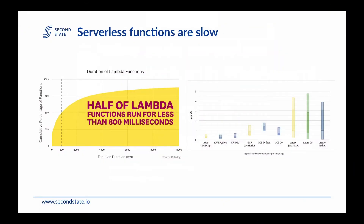One of the primary issues is that serverless functions are slow and they're also heavy. On the graph on the left, we can see data from Datadog showing that half of Lambda functions run less than 800 milliseconds — 0.8 seconds. The graph was presented in a way to say that serverless functions are fast. But my initial reaction was: serverless functions are so slow! It's 800 milliseconds, almost a second. Consider that if you have a Jamstack application using maybe 10 or 20 different microservices or APIs on the backend, you need to make those round trips and the time can quickly add up.